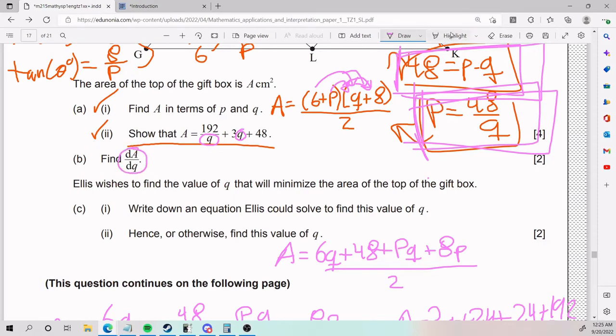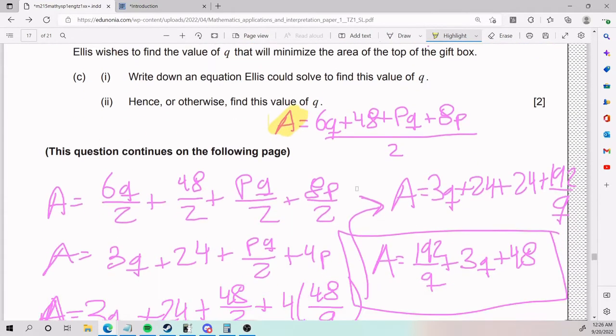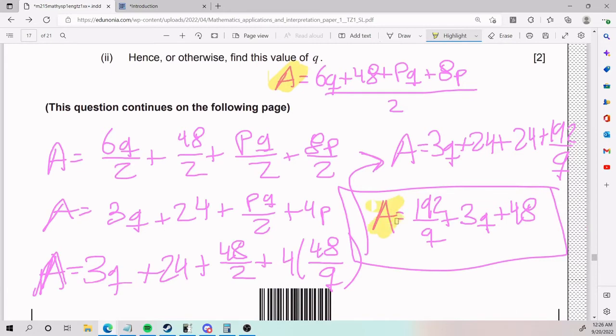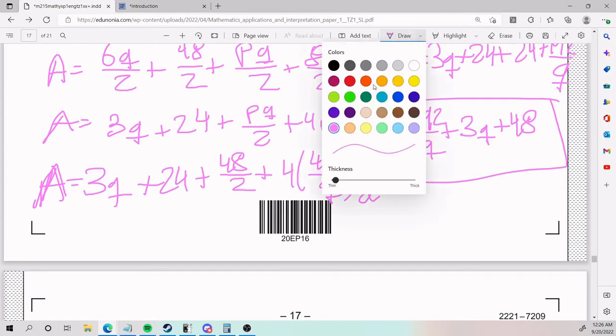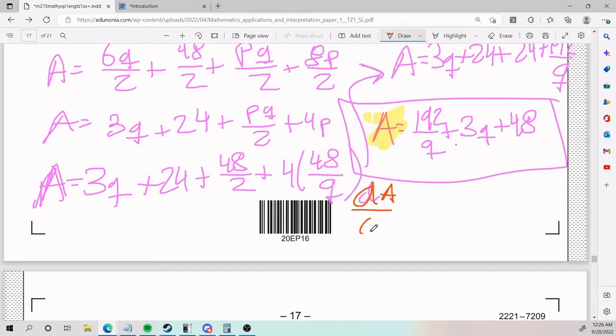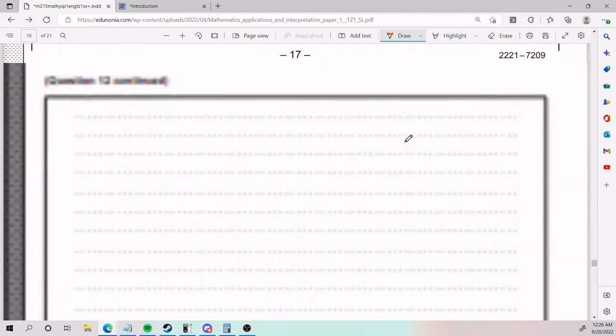Now, we need to find dA over dQ. What that is telling you is that you take the formula with your A, which is this guy here, and you do the derivative in respect to Q. Now, of course, you want to do it with whatever has only Q, which is the one down here. And so, dA over dQ. It's going to get a little bit tricky when Q is on the bottom. And so, before I do the derivative, if you have a variable on the bottom, you want to put it on top first. It's just going to be easier in your life. Trust me. 192 times Q to the power of negative 1 plus 3Q plus 48. So, all I did here was bring the Q up top. Negative exponents work like that.